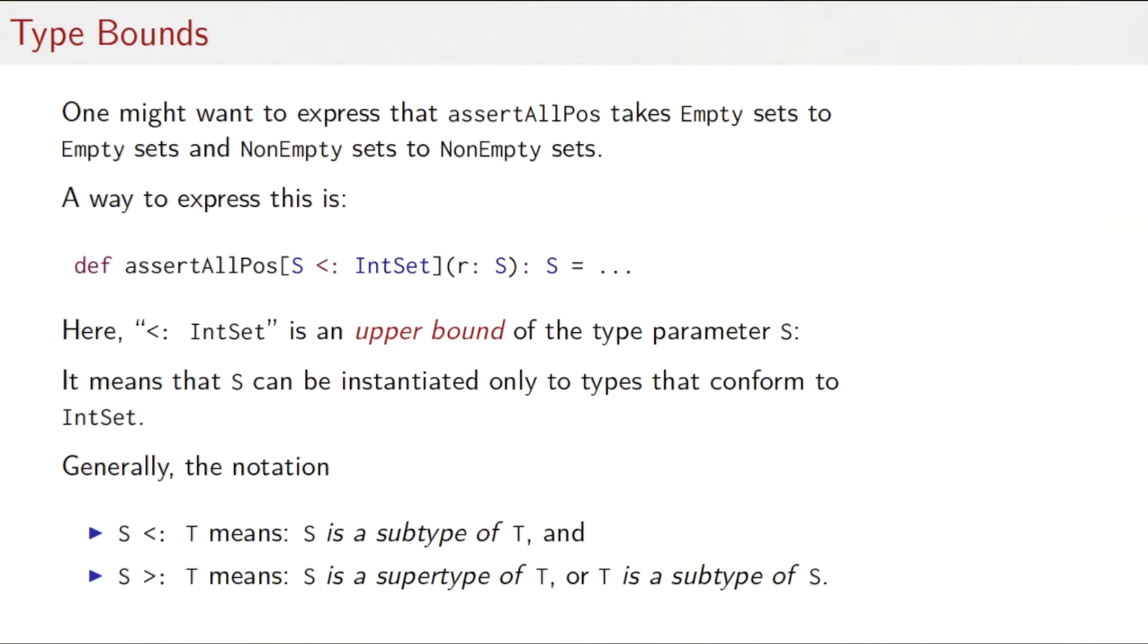One way to express it is this way. We could say assertAllPos takes some type S, that must be some subtype of IntSet, either Empty or NonEmpty. And a set of that type itself, and it will return a result of the same type. Here the part that says less than colon IntSet is an upper bound of the type parameter S. What it means is that we can instantiate S to any type argument as long as the type argument conforms to the bound, conforms to IntSet.